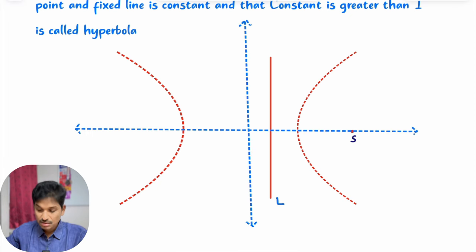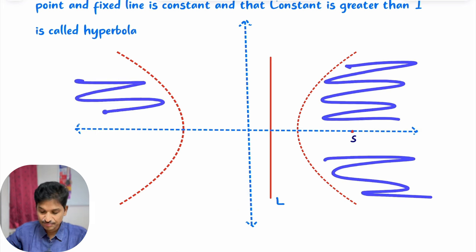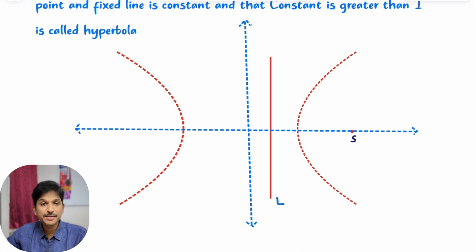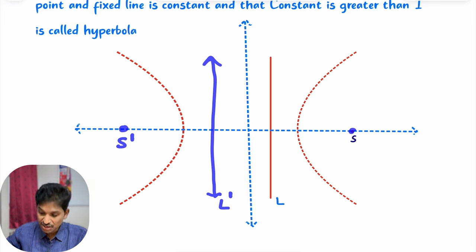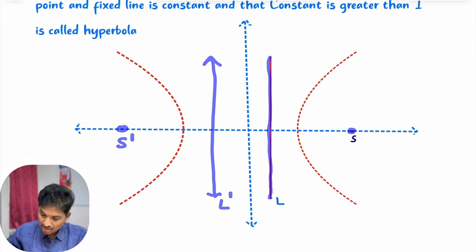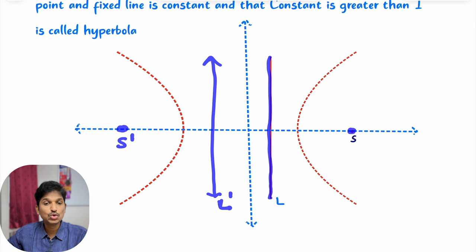Now you need to know a few things. This hyperbola is symmetrical about the coordinate axes — this is the x-axis and this is the y-axis. Because of this symmetry, the same diagram we will get when you take fixed point S dash here and fixed straight line L dash here. So as hyperbola is symmetrical about the coordinate axes, this hyperbola will have two foci and two directrices. I hope you understand the definition of hyperbola and why it will have foci and directrices.